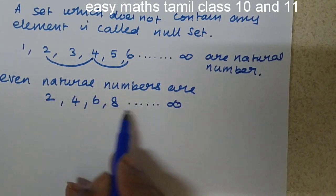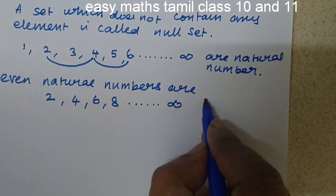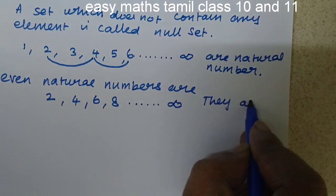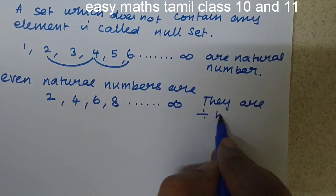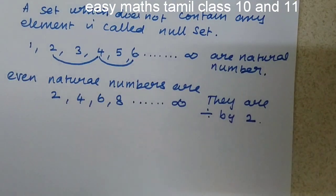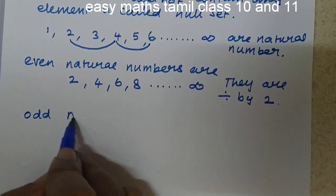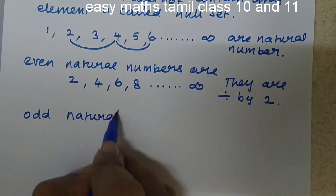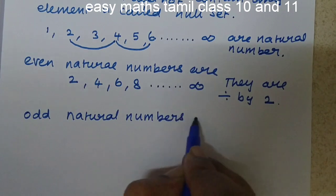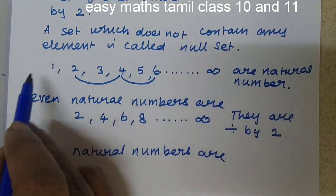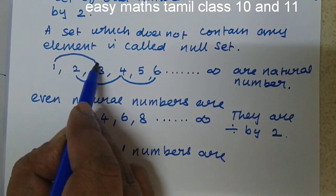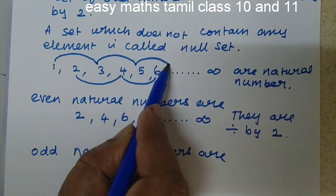We can divide these numbers by 2, so they are divisible by 2. Then what are odd natural numbers? Odd natural numbers are 1, 3, 5, 7.